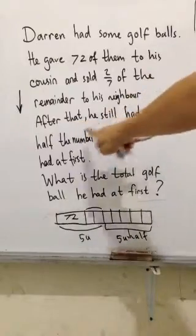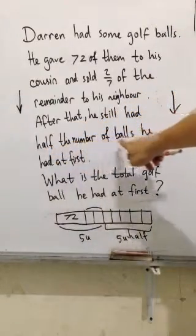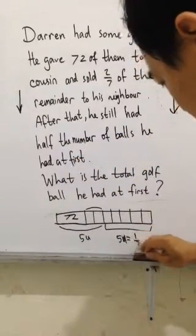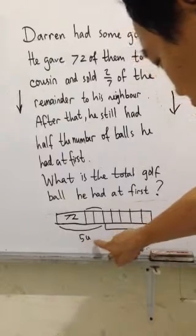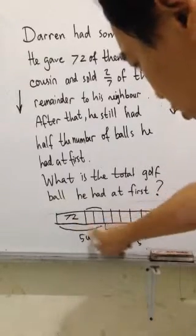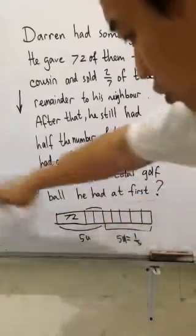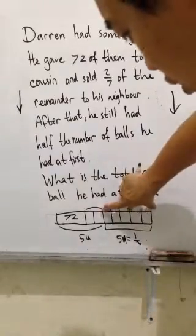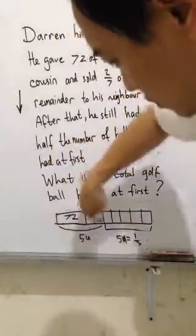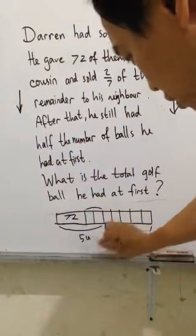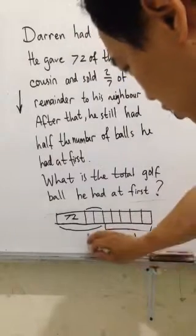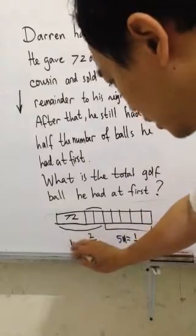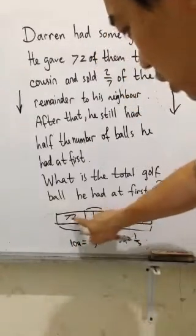For example, if after that he still had 1 third the number of balls he had at first, that means these 5 units represent 1 third. So that means this whole side is 2 thirds, because 1 third and 2 thirds make 1 whole. If 1 third is 5 units, then 2 thirds is 10 units. Because this section is 2 units, that means this part is 8 units.